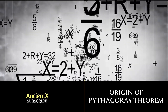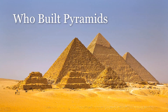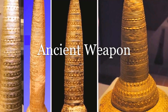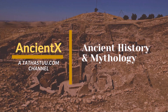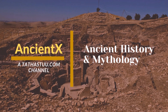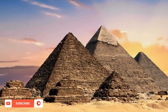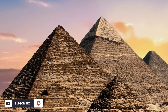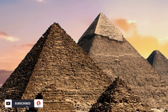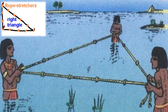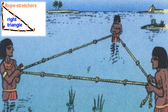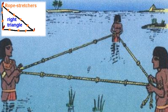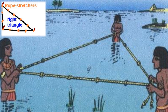So without losing time, let's start today's video. The Egyptians had a very interesting strategy to improve the stability of the pyramid's walls, originating around 2500 BC in Egypt. They used a rope with 12 knots tied evenly spaced, which resulted in the famous 3-4-5 triangle, forming a 90-degree angle.